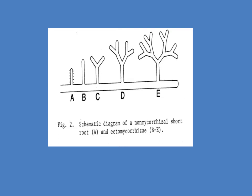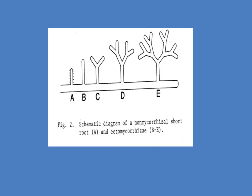When you have a plant root, as shown in example A, that is without any mycorrhizal fungus associated with it. When it is infected with a type of mycorrhizal known as ectomycorrhizal, you tend to have increased branching of the roots — once again, increased surface area, which only benefits the plant. This slide shows how different types of fungi can infect the roots and cause different structural changes within the roots, some more dramatic than others.